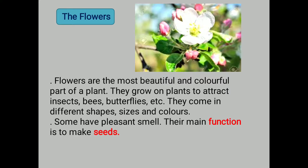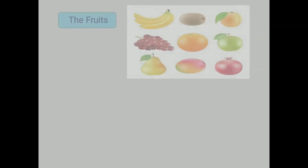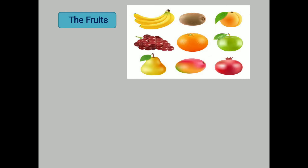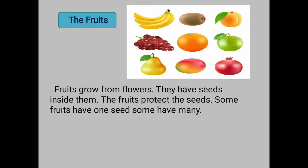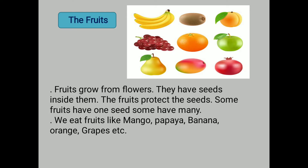Now the fruit — the ultimate part of the plant. Fruits grow from flowers and have seeds inside them. The fruits protect the seeds. Some fruits have one seed and some have many seeds. We eat fruits like mango and papaya which come from outside, as well as banana and orange. Here in Kashmir we have apple, apricots, cherry, plums and grapes. Some fruits are sour and some are sweet.